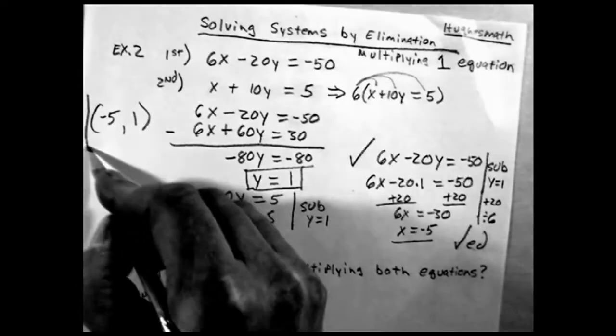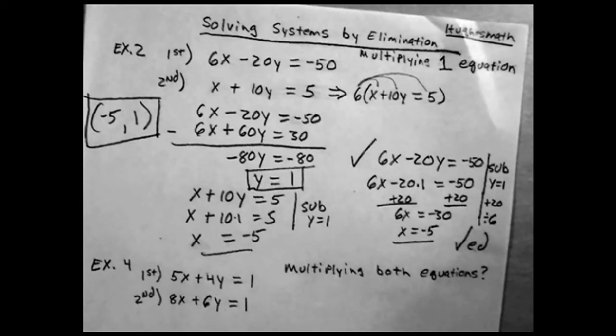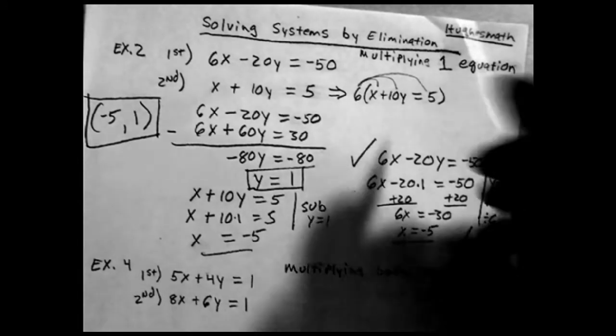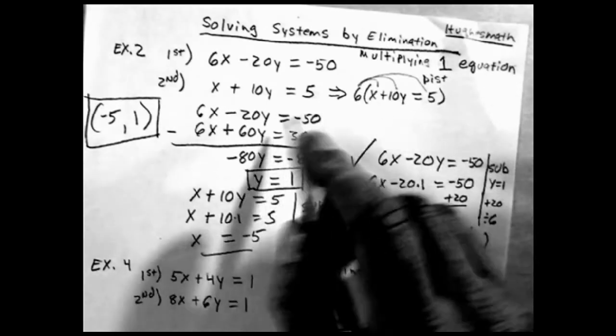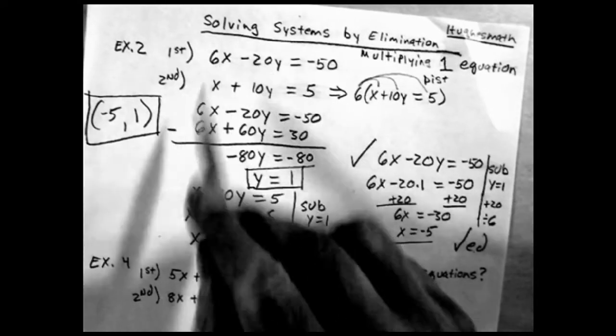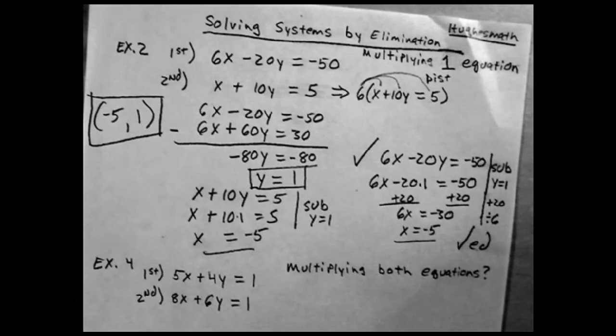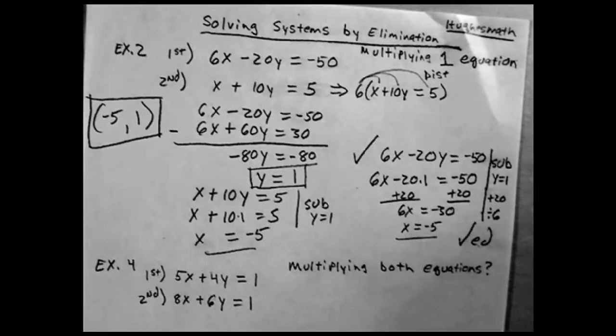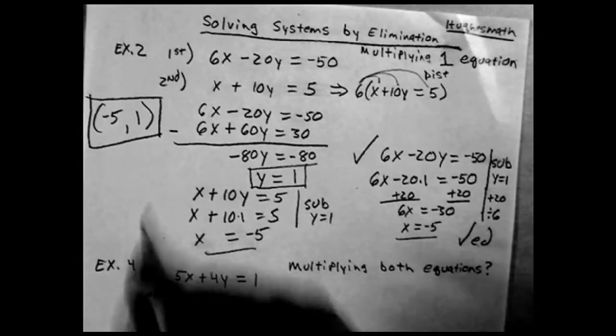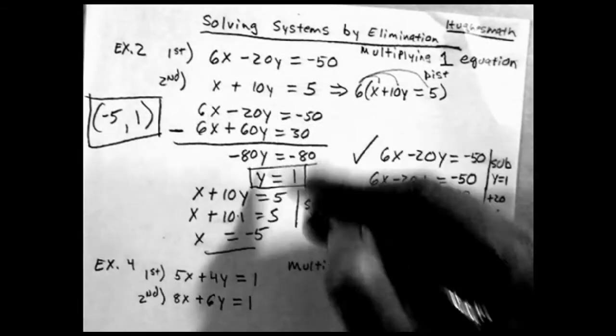Alright, these are the same, so I checked it. So this is my solution point. This is where it crosses, where the two lines cross. Again, here I distributed, and backing up a little bit farther, I needed two coefficients that could subtract, so they had to be the same or one negative and one positive, so I can add them and I subtracted them.